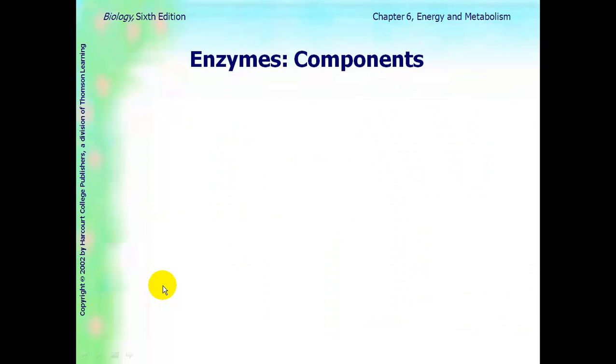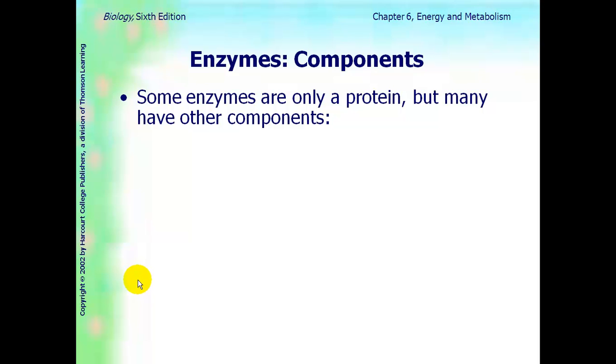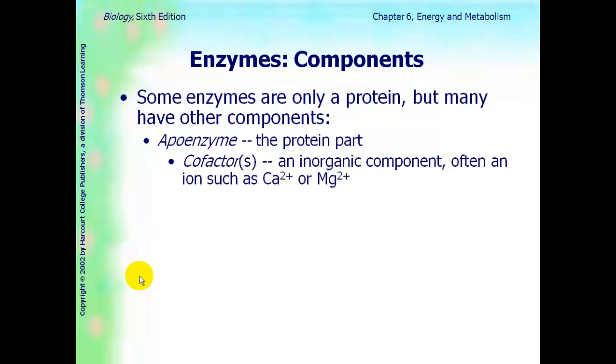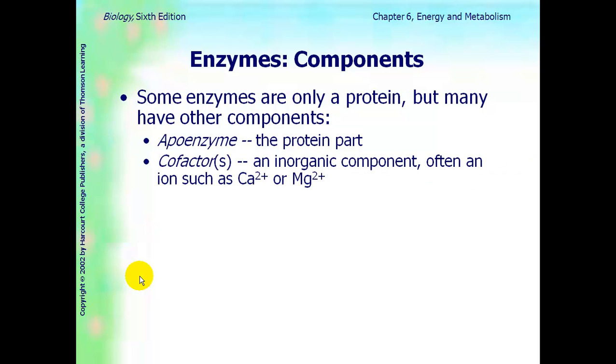Components of an enzyme. We know enzymes are proteins, but they actually do have some other components involved. So this is really a vocabulary thing here. Apoenzyme is specifically referring to the protein part of an enzyme. Cofactors are inorganic, and they're usually ions like calcium or magnesium. So when you take the apoenzyme, the protein part, and you take the ions with that, that's what makes up an active enzyme.